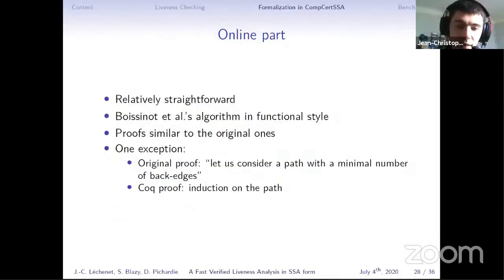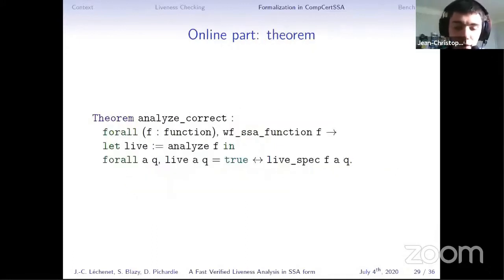I won't go into detail about the online part, since it was relatively straightforward. Actually, it's just the algorithm of Boissinot et al. but in functional style. The proofs were similar to the original one with one exception. It's a proof which starts with, let us consider a path with a minimal number of back edges. And this kind of proof is not straightforward to translate into Coq. So instead we performed another proof by induction on the path. And finally, we have the correctness theorem we expect, which says that if we consider a function that is well-formed and we perform the analysis, the analysis returns true for variable A at point U if and only if A is live at U.